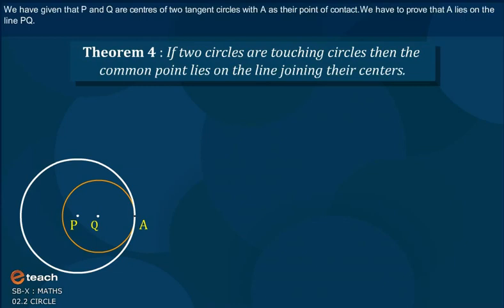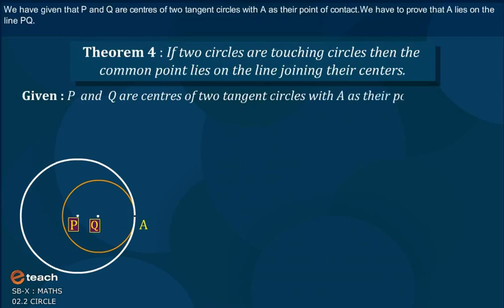We have given that P and Q are centers of two tangent circles with A as their point of contact. We have to prove that A lies on the line PQ.